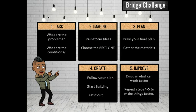This is the engineering design process. There are five different categories. It starts off with ask, imagine, plan, create, and improve. Each category has different points that you have to consider when you are at that stage.